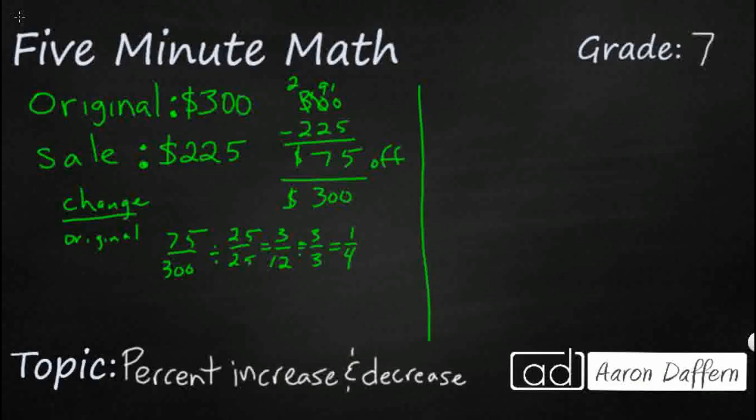So we get a fraction. Now we just need to turn that into a percent. And most of us know that as one of our benchmark fractions, that equals 25% off. So that was a 25% off sale.